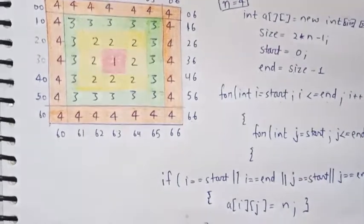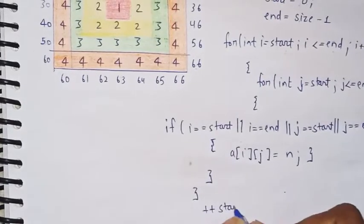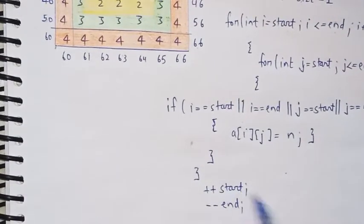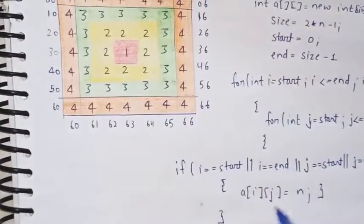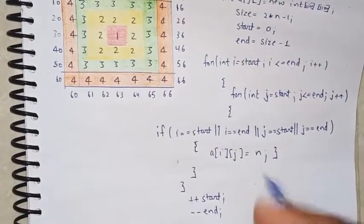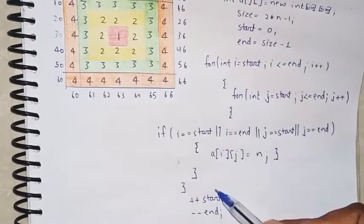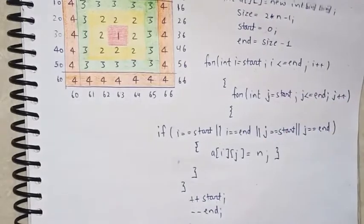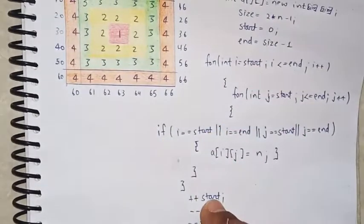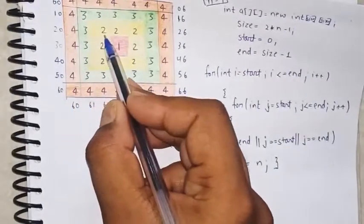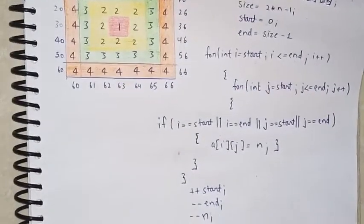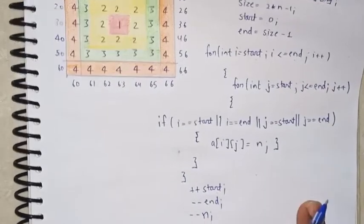After printing the outer border, I would like to add 1 to start and subtract 1 from end. So start increases by 1 and end decreases by 1. I don't need to add two separate loops — just one loop, and I pass the updated start and end values. This handles the 3 border and the 2 border automatically. After two changes, the score becomes 2; if it changes again, you get 1. So four cases end up covering all the borders.